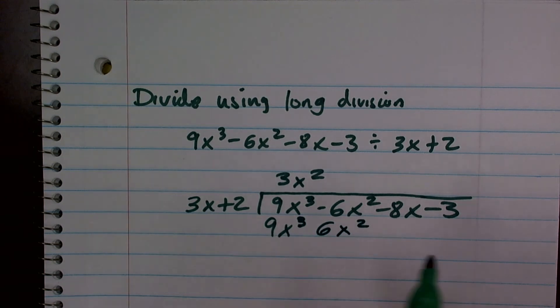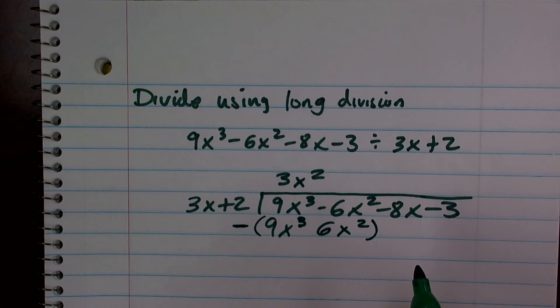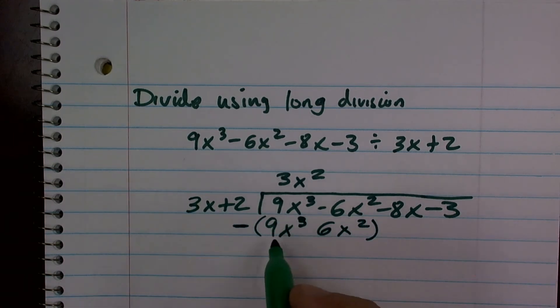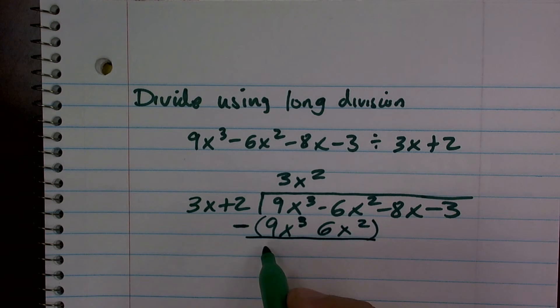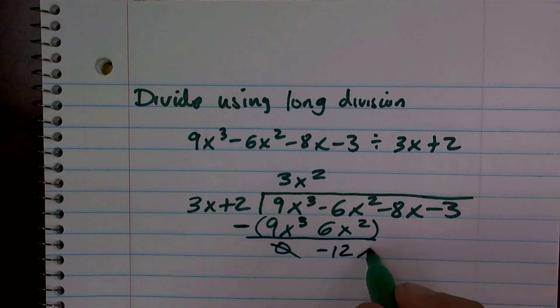Now, it's important when subtracting that you subtract the whole line. So 9x cubed minus 9x cubed gives me 0. Negative 6x squared minus 6x squared gives me negative 12x squared.